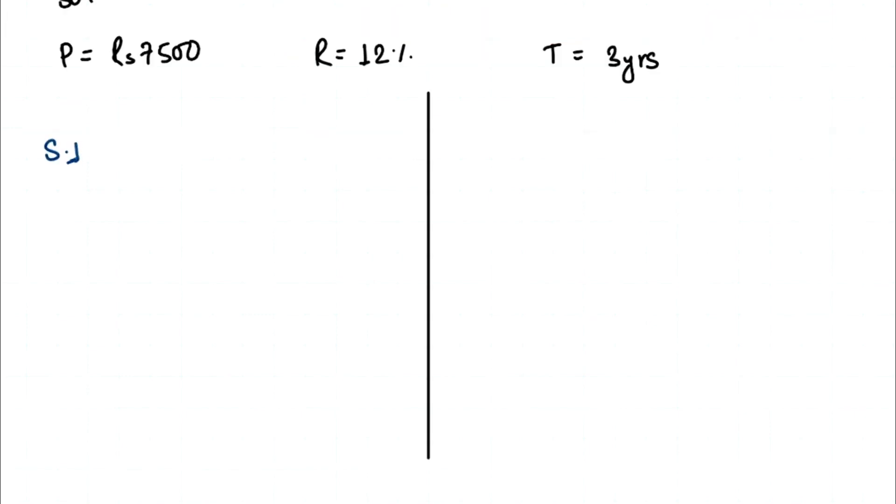We know that the formula of simple interest is PTR divided by 100, equals to 7,500 times 3 times 12 divided by 100. We can cancel these zeros, and when you multiply all of this in your calculator, you get 2700 rupees.